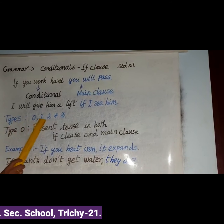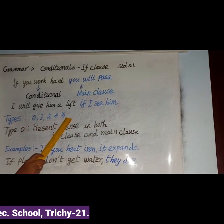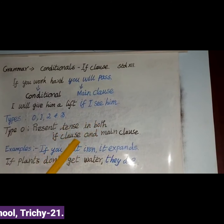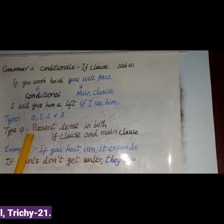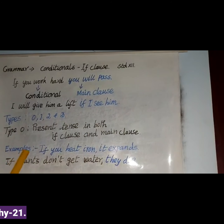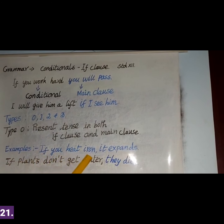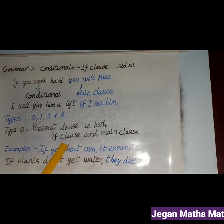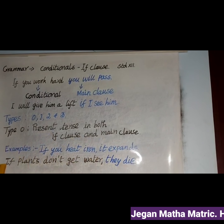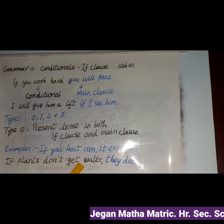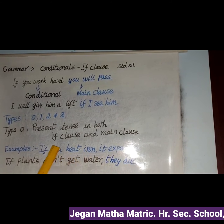Type 0: present tense in both the if-clause and the main clause. For example, 'If you heat iron, it expands.' Both verbs are present tense. Another example: 'If plants don't get water, they die.' Again, 'don't get' and 'die' — both present tense. This expresses scientific truth.